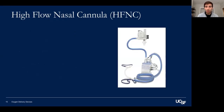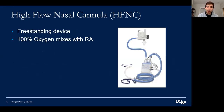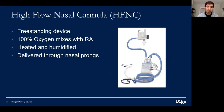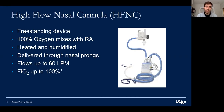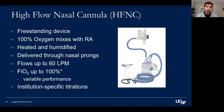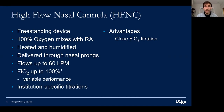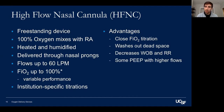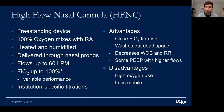High flow nasal cannula is a free-standing device that mixes 100% oxygen with room air. It's heated and humidified to enable delivery of high flows, delivered through a more sturdy nasal prong than standard nasal cannula. Flows are up to 60 liters per minute and FiO2 up to 100%. This is still a variable performance device, and institution-specific titration schedules — including whether to titrate flow or FiO2 first — should be discussed with respiratory therapy. Advantages include close FiO2 titration, dead space washout, decreased work of breathing, and some PEEP at higher flows. Disadvantages include high oxygen use, reduced mobility, and need for close respiratory therapy involvement.